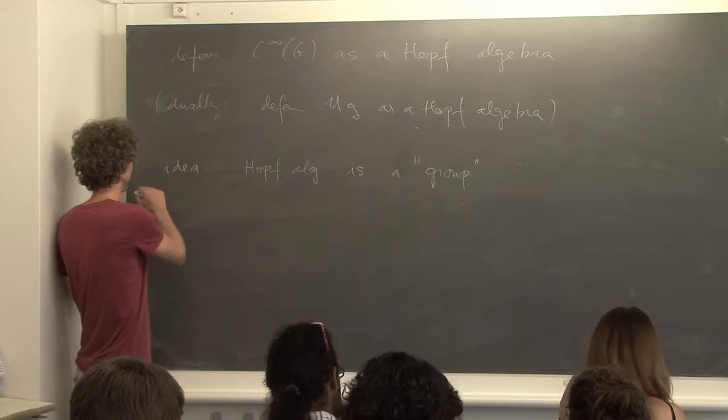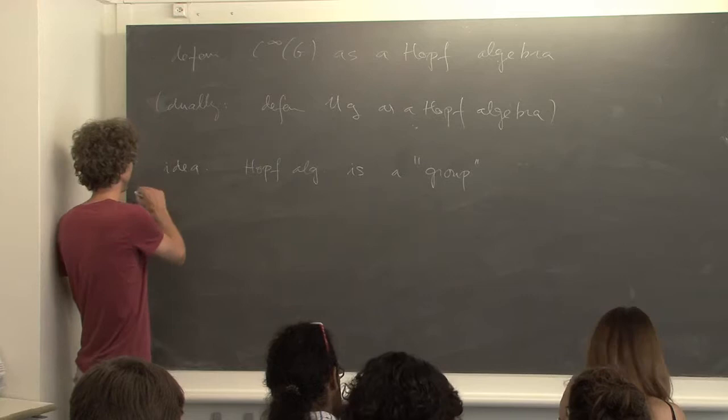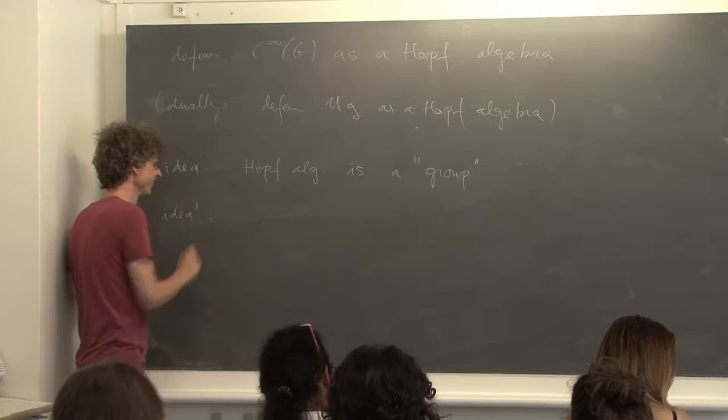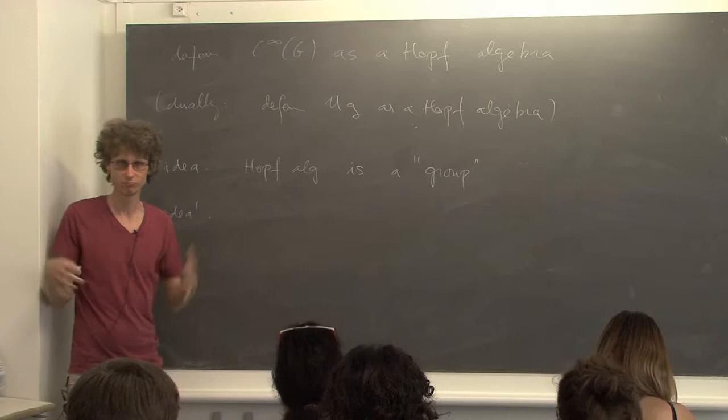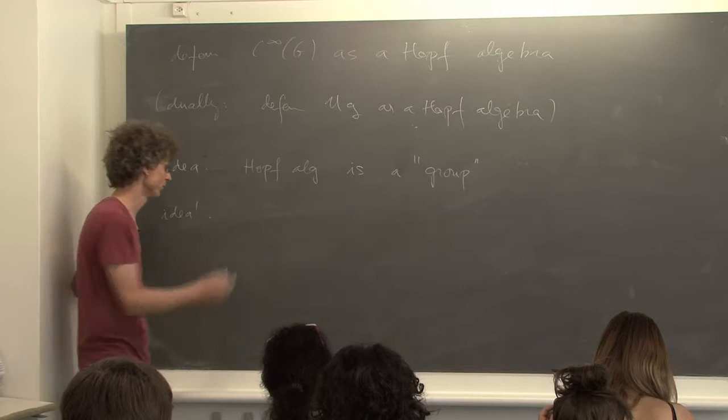I was using simplicial sets, so let me now try to say the same thing but without simplicial sets and without simplicial objects — just say in the simplest examples what was happening. The idea is something like this: if G is a group, then in terms of those simplicial sets I was talking about BG, which is also equal to EG mod G.